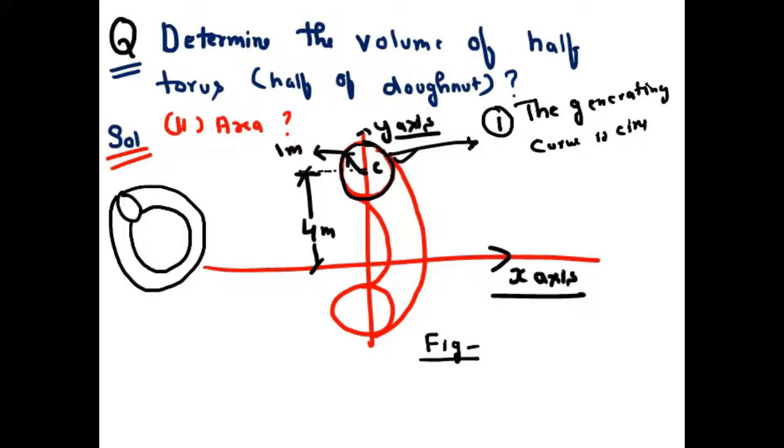The second part is the axis of revolution. The axis of revolution is the most important thing. The third part is the distance of centroid from axis of rotation.